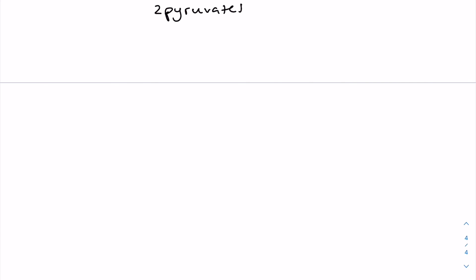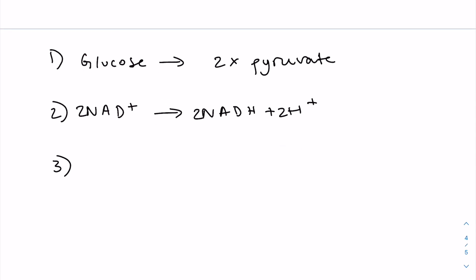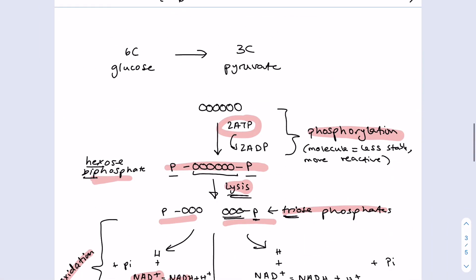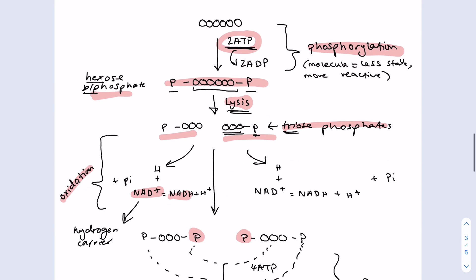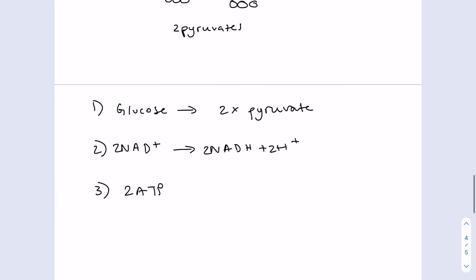Firstly, glucose has been broken down into two molecules of pyruvate. Secondly, two hydrogen carriers have been reduced by oxidation. Basically, NAD+ has been reduced into NADH + H+, and again, this happened twice. Thirdly, a net total of two ATP molecules were produced, as four were generated. However, if we remember, two were used at the beginning, so that's four minus two, which is two.